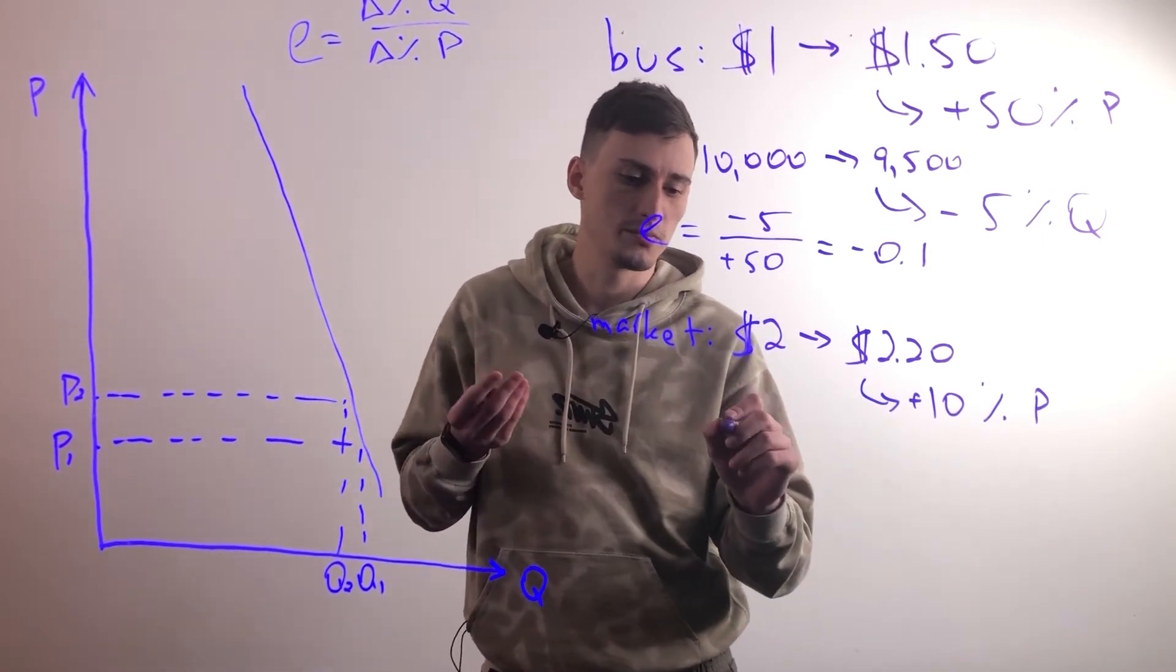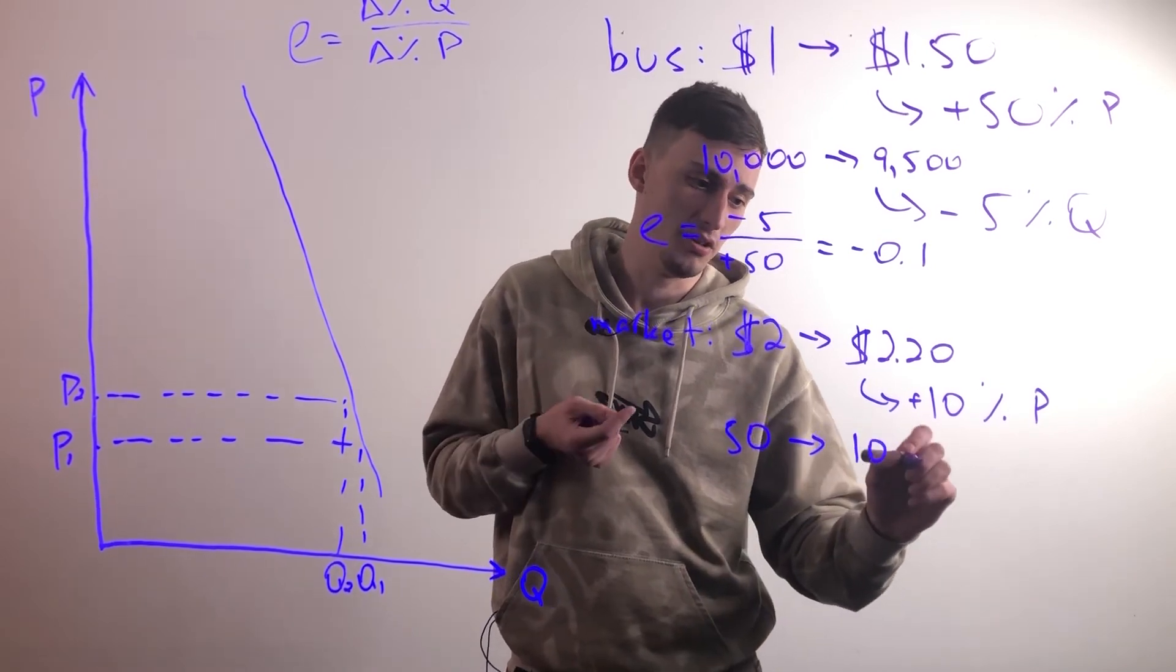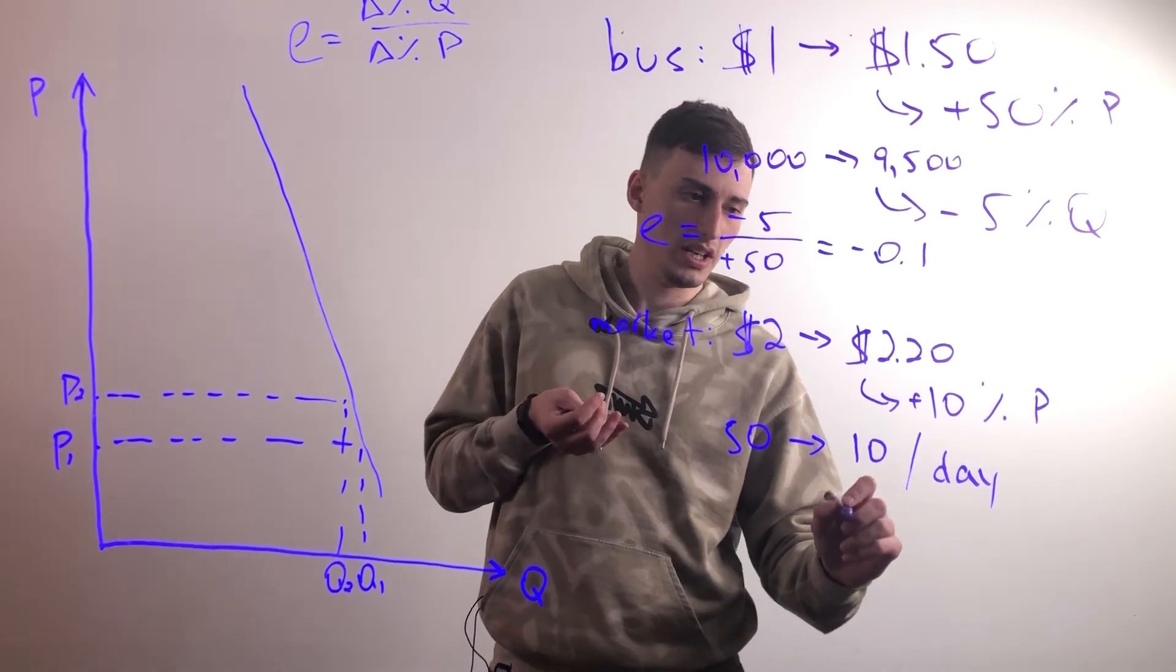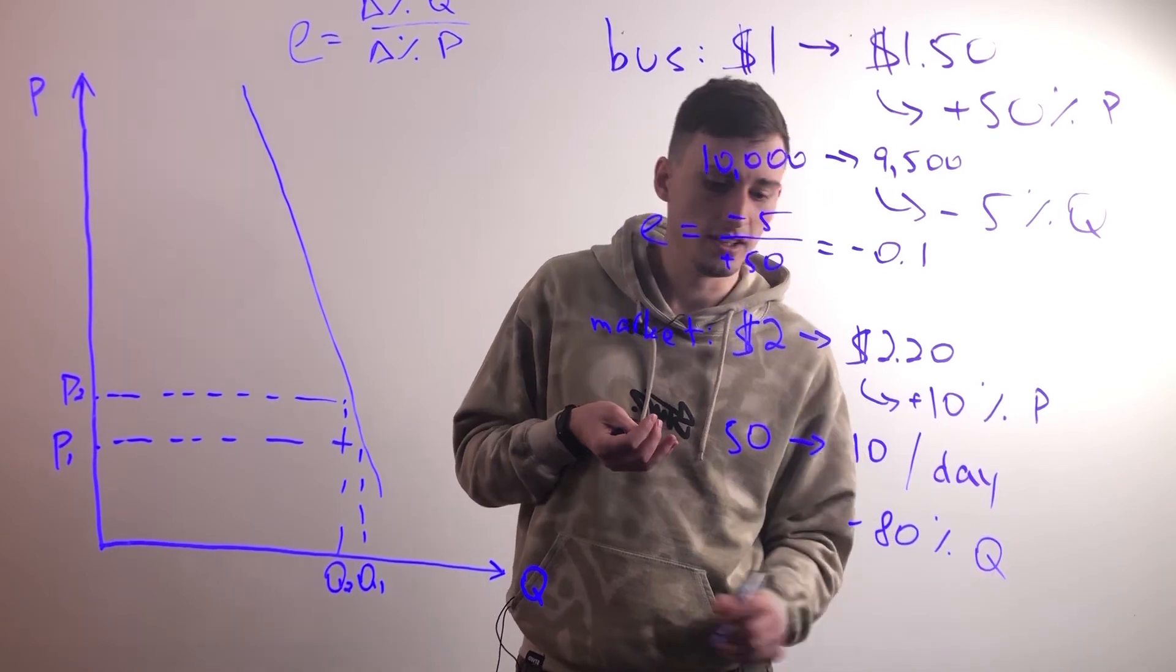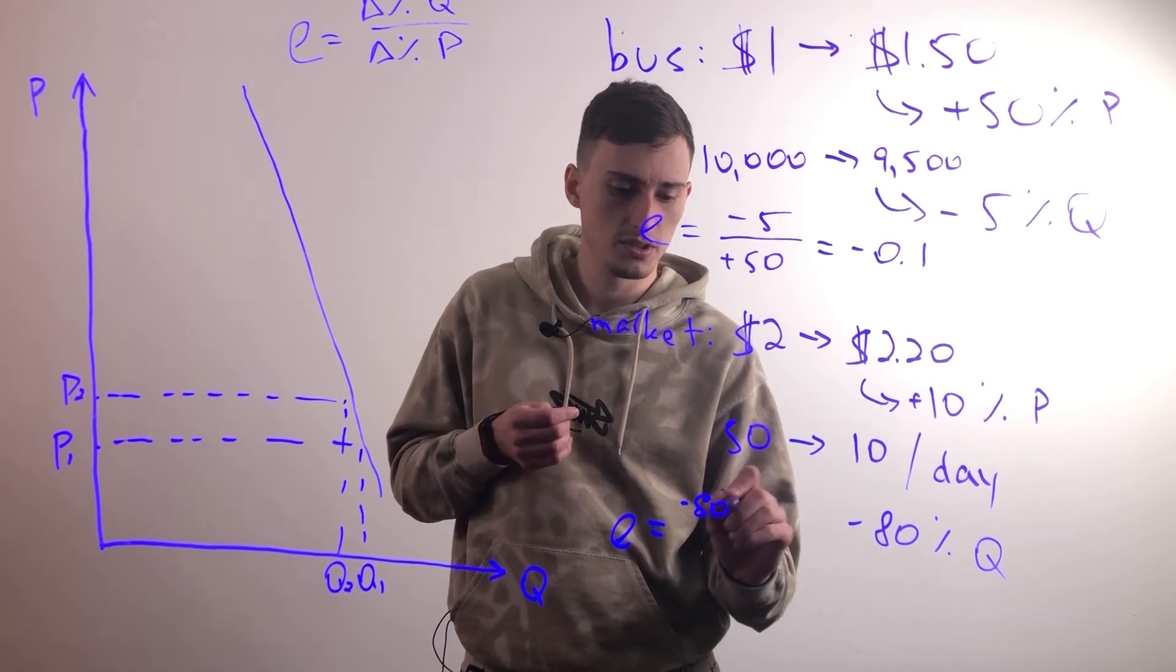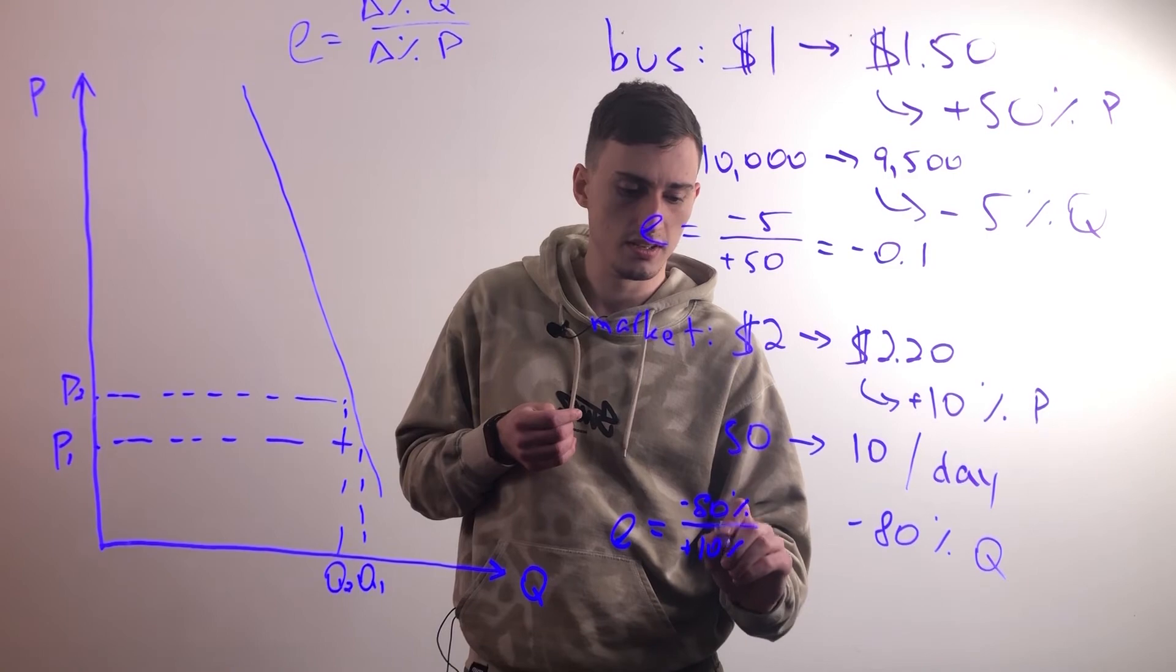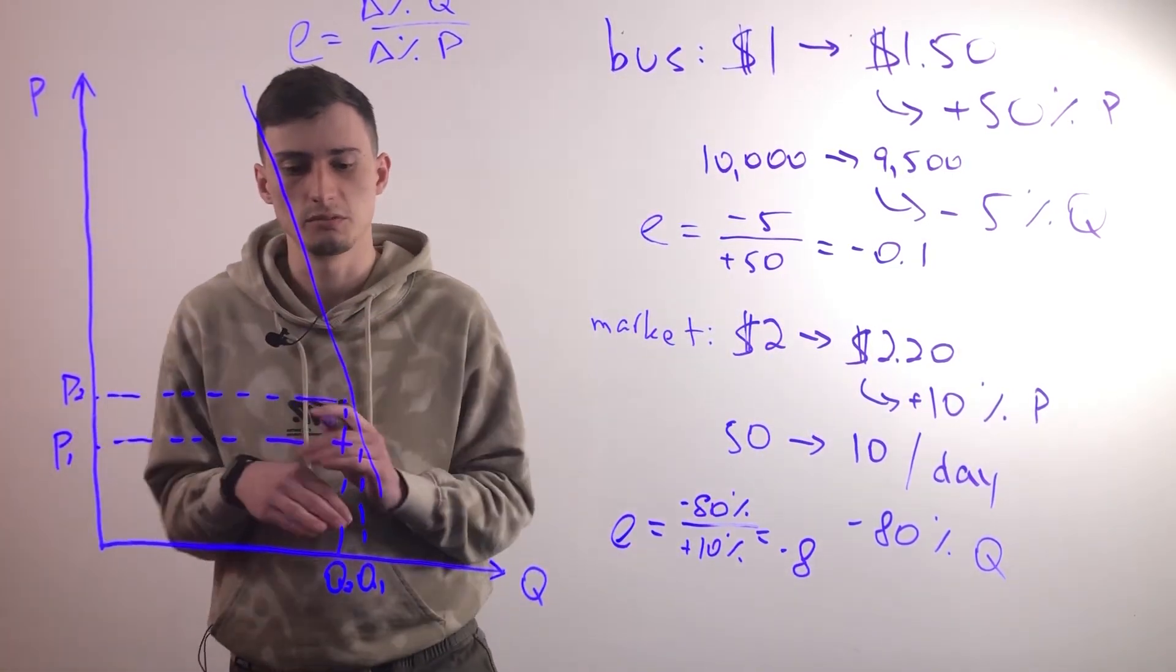So obviously what we would see is his sales drop from say 50 pounds per day down to 10 pounds per day, which is a minus 80 percent increase in quantity. What's the elasticity here? Elasticity is the change in quantity, so minus 80 percent, divided by the change in price, plus 10 percent. So this is an elasticity of minus eight.